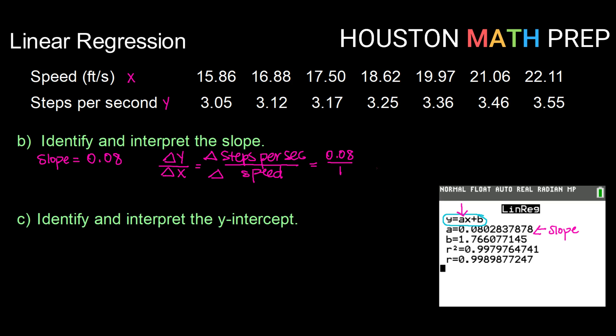So our interpretation of this slope is that for each increase in 1 foot per second, steps per second will increase by 0.08. Now, of course, that's on average. It's not going to always work exactly like that, but that's what our slope tells us. On average, an increase in 1 foot per second should increase steps per second by about 0.08.